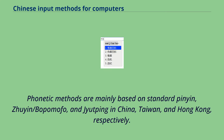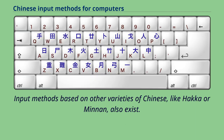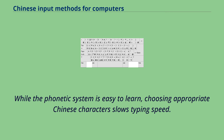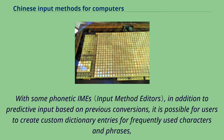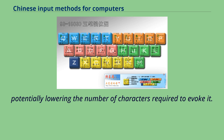Phonetic methods are mainly based on standard Pinyin, Zhuyin/Bopomofo, and Jyutping in China, Taiwan, and Hong Kong respectively. Input methods based on other varieties of Chinese, like Hakka or Minnan, also exist. While the phonetic system is easy to learn, choosing appropriate Chinese characters slows typing speed. Most users report a typing speed of 50 characters per minute, though some reach over 100 per minute. With some phonetic IMEs, in addition to predictive input based on previous conversions, it is possible for users to create custom dictionary entries for frequently used characters and phrases, potentially lowering the number of keystrokes required to evoke them.